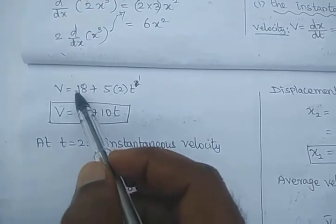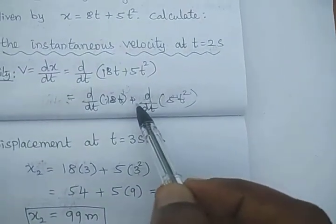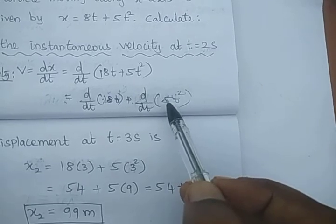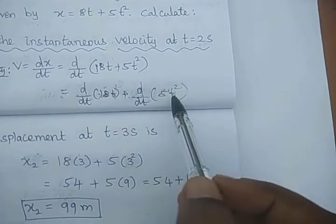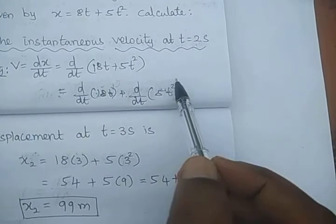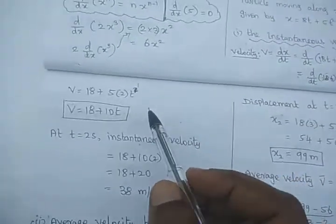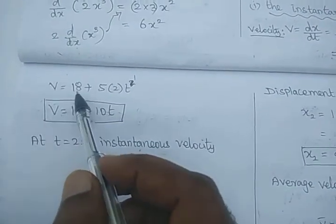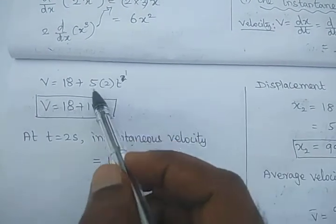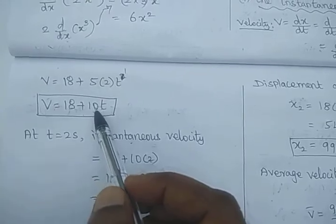The velocity so far is 18, plus d by dt of 5t squared. Take 5 outside; t squared gives 2 times t power 1. So we get 18 plus 5 times 2t, which is 18 plus 10t. The velocity equation is v equals 18 plus 10t.